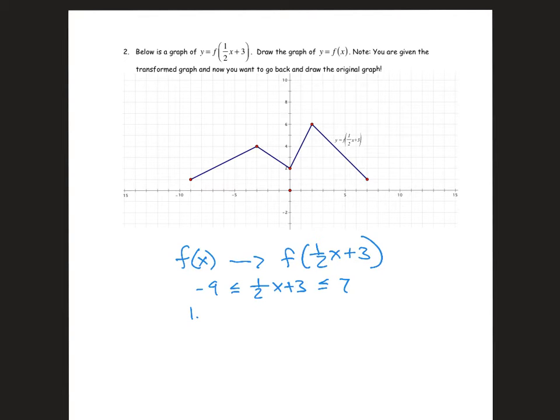And then the second step would be stretch horizontally by a factor of two, so multiplying each x point by a factor of two. In other words, stretch horizontally by a factor of two, just multiplying each x value by two. So that's what I would have done to get from the original function to the transformed.